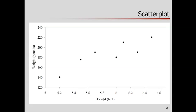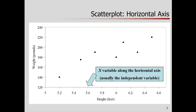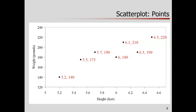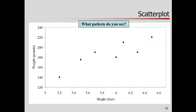Enter the scatterplot. Here's a scatterplot of this data. We have a horizontal axis representing one variable and a vertical axis representing the other — x and y conventionally. Each point in the space defined by these axes gives us the value of a data point. This point represents a person: they have a value of 5.2 along the x-axis and 140 along the y-axis. Each point locates a person in this space.